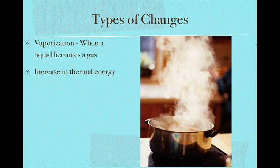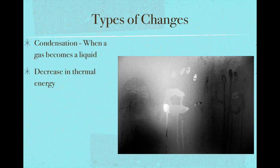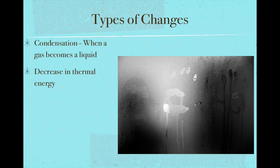Vaporization occurs when a liquid becomes a gas — we increase the thermal energy enough so that particles break free of the liquid state and begin to fly around. Condensation is where a gas becomes a liquid. When you get out of the shower, hot water becomes vapor floating in the bathroom air. When it gets near the cold glass of the mirror, it cools down enough for the particles to become a liquid again — resulting in a sheet of liquid water on your mirror.